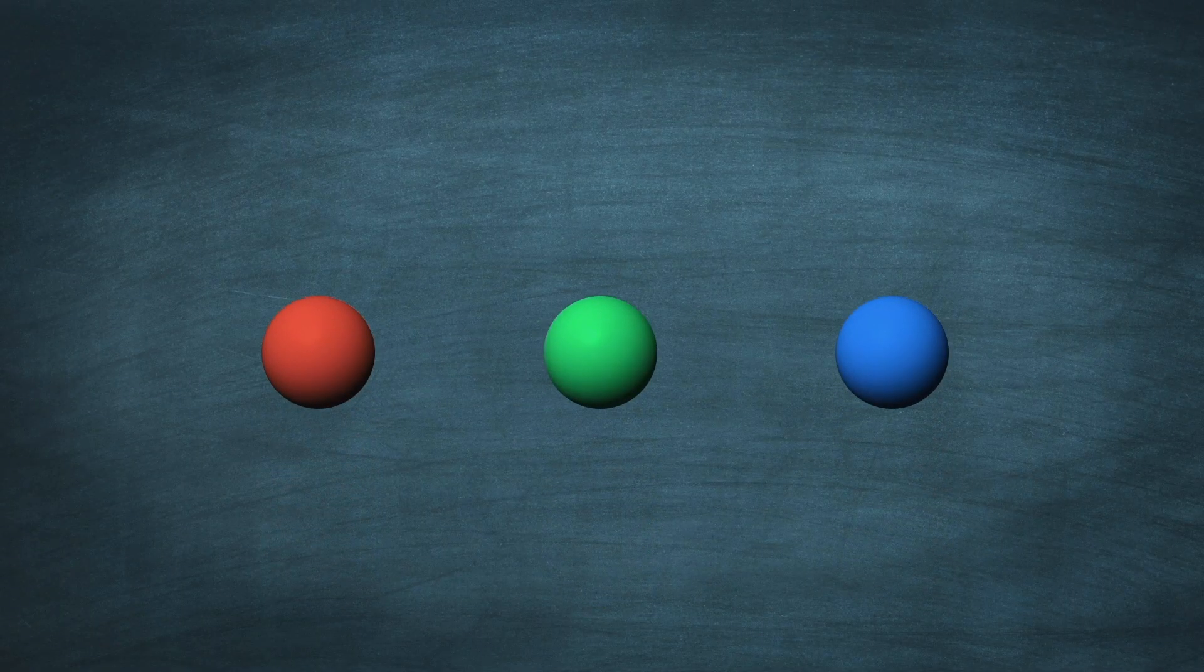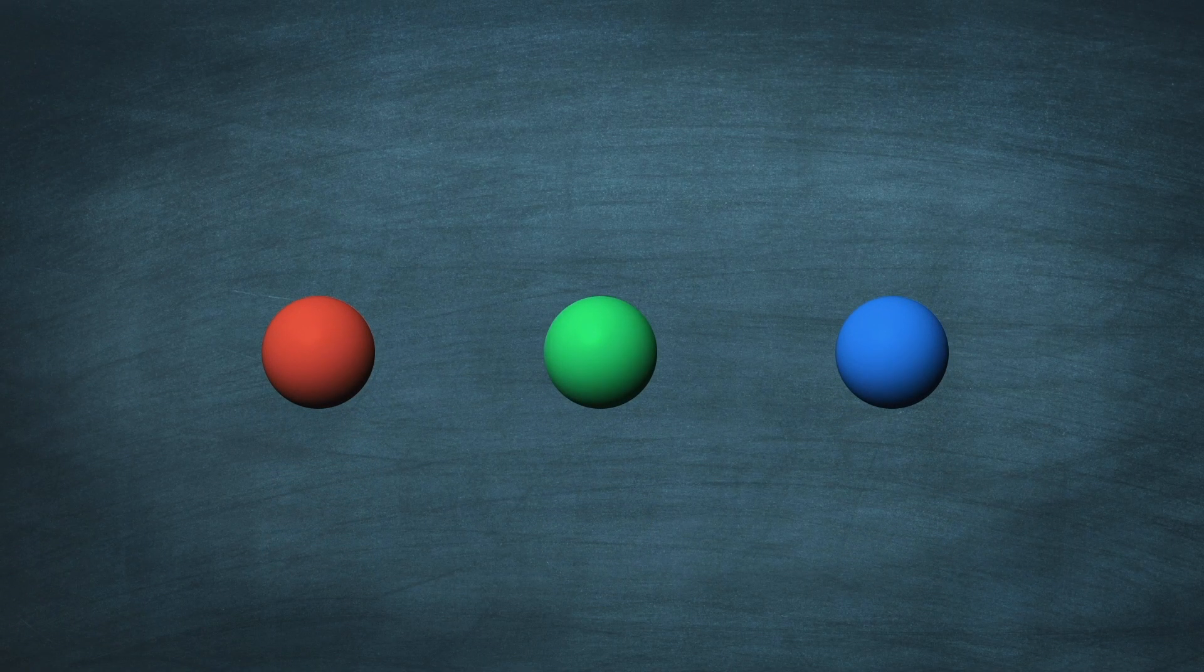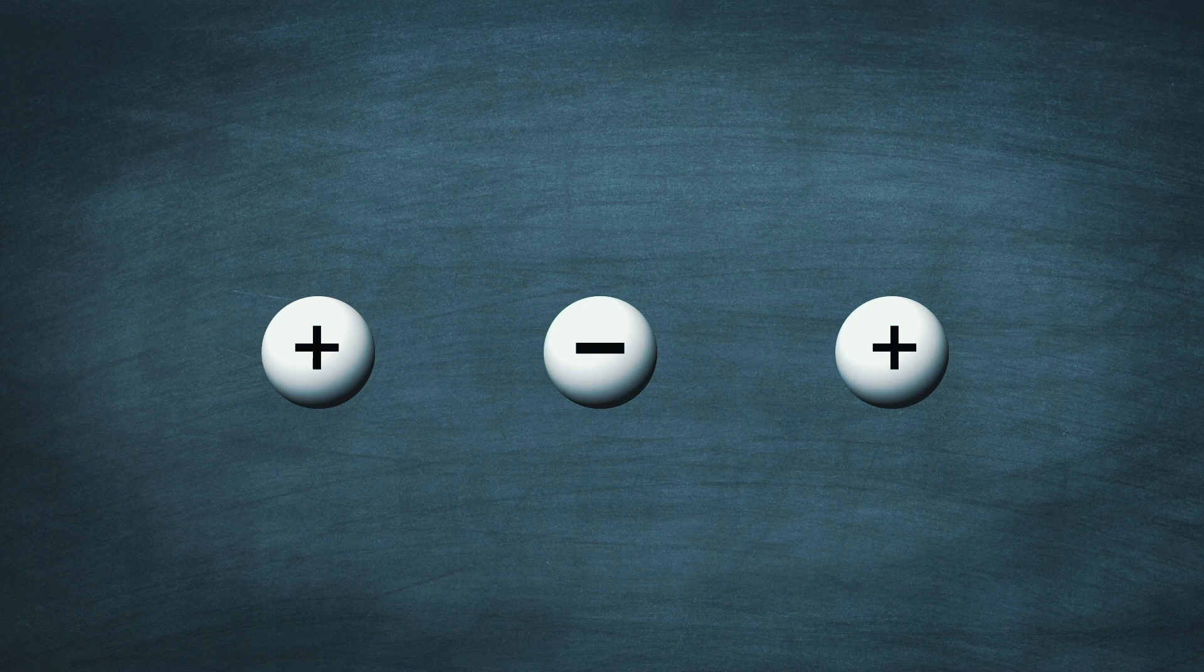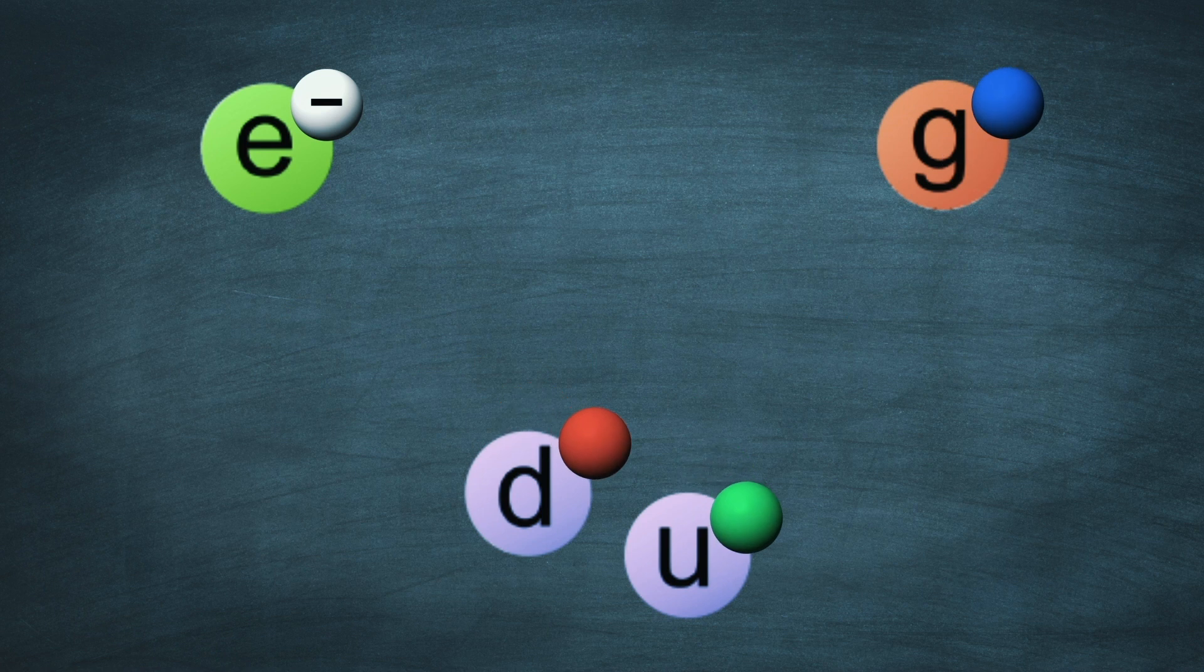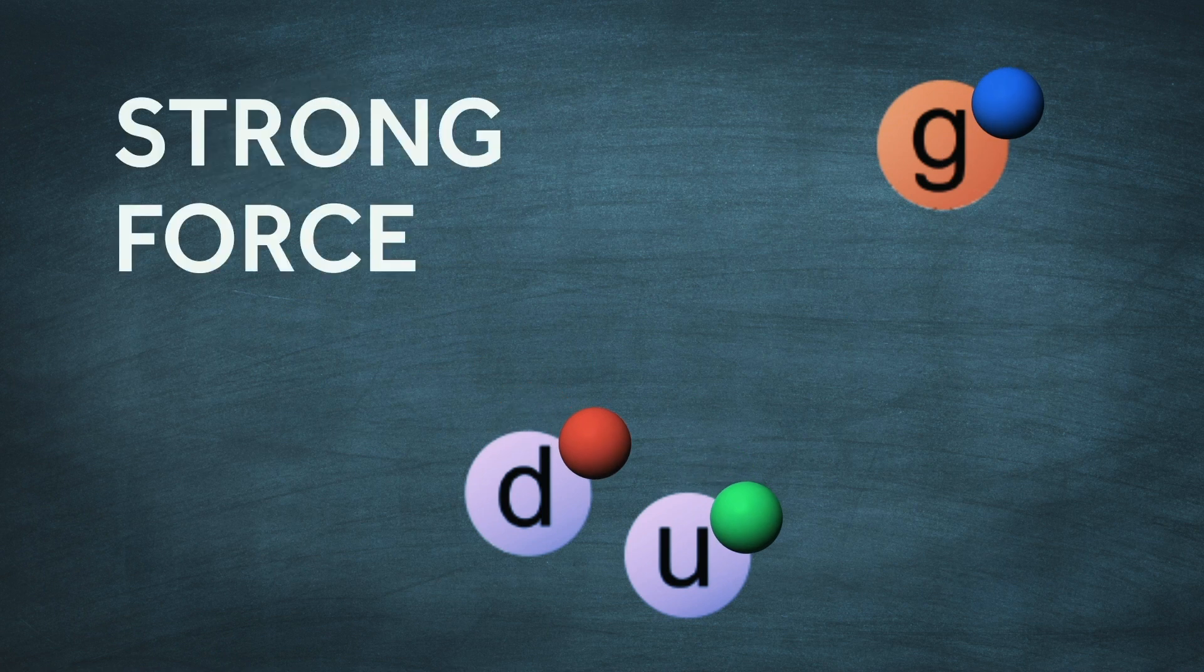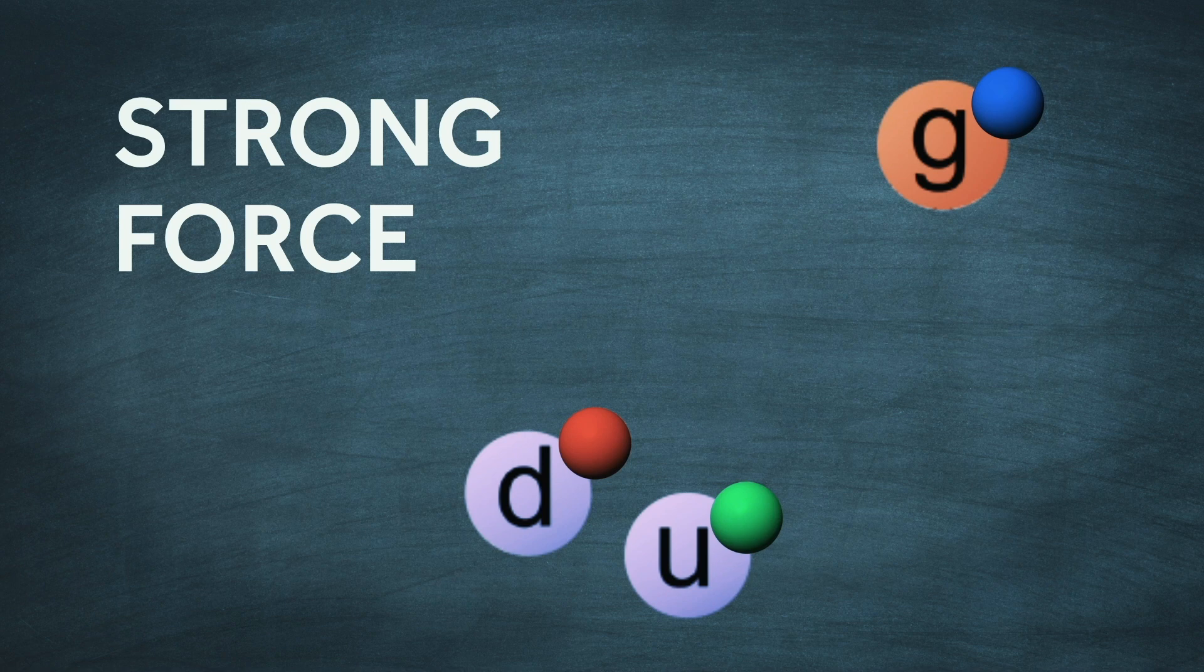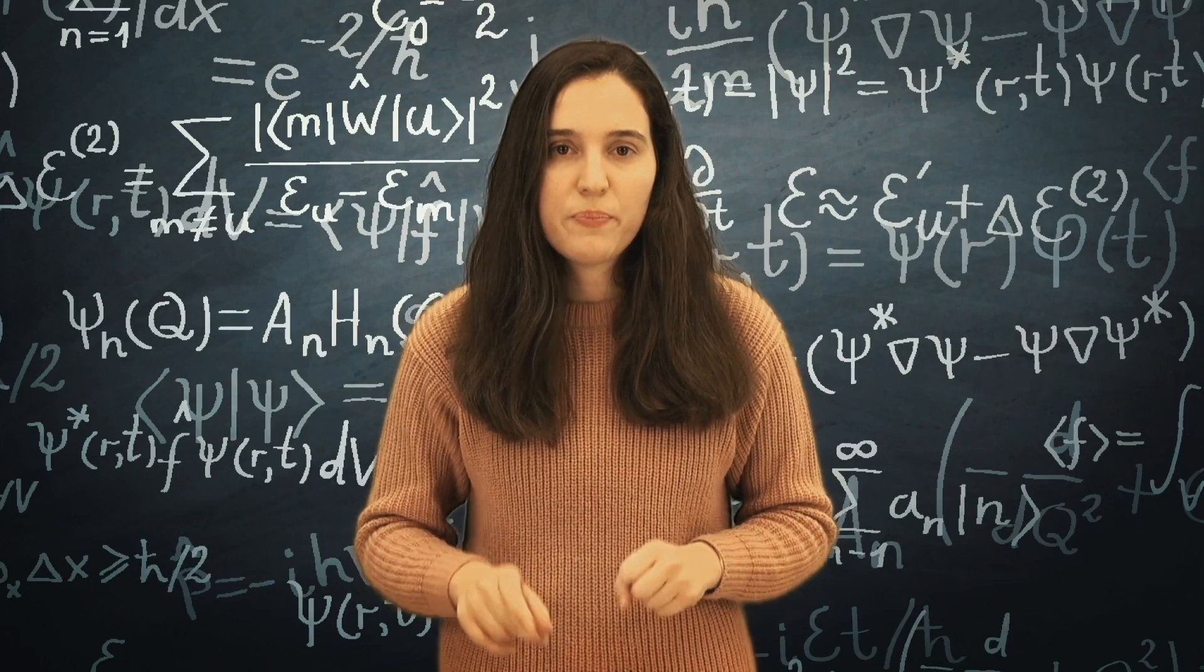It's easier to understand what color represents in particle physics by analogy with the electrical charge. Just like electrons carry this charge, quarks and gluons carry the color charge, a property that defines their interactions. The strong force will act upon such particles. Now an important concept comes into play: confinement.